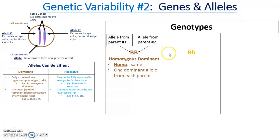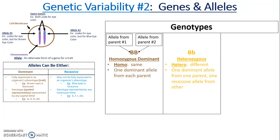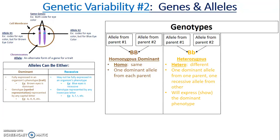If we have a capital B and a lowercase b, because they're not the same they're called heterozygous — hetero meaning different. There is one dominant allele from one parent and one recessive allele from the other parent. When a genotype is heterozygous it will express the dominant phenotype, so this person with capital B and lowercase b for brown and blue eyes will show brown eyes.